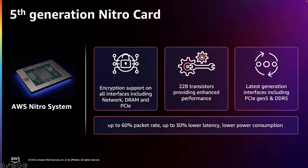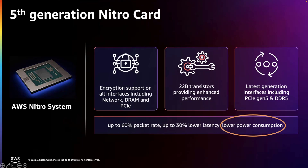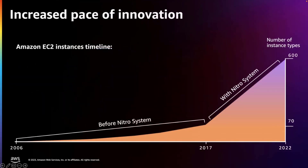There's one more aspect of the Nitro system I wanted to share. It's a modular design — almost like a Lego of components — with common components across all AWS servers, and this significantly accelerated our engineering pace. It also allowed things like up to 60% packet rate increase, up to 30% lower latency, and lower overall power consumption. This is why we're talking about Nitro when we pair it with Graviton. Nitro also allowed us to innovate faster: before Nitro, it took 11 years to grow from one instance type to 70. With Nitro, we grew from 70 to around 500 in just five years. These 500 instance types provide customers with the flexibility to choose the optimal instance for their specific use cases — you always want to right-size the instance type to the workload.